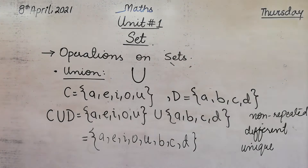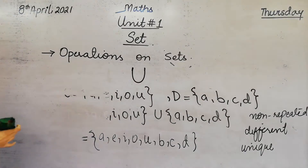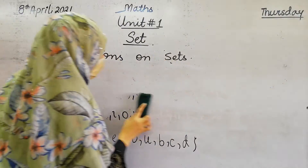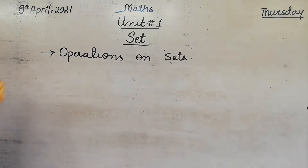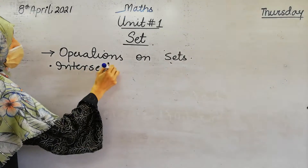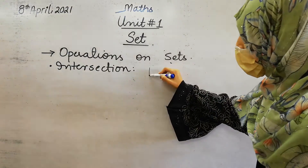In union, we gave all the elements of both sets. The next operation is intersection. Now we will see what we do in intersection. This is the sign of intersection.